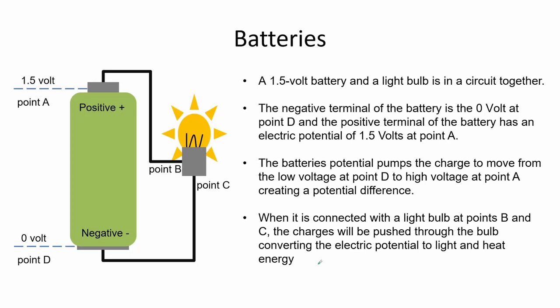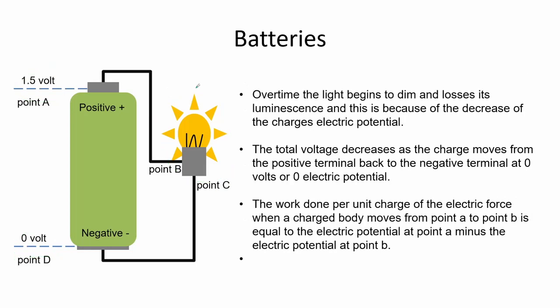Here we have a 1.5-volt battery and a light bulb in a circuit. The negative terminal is at 0 volts at point D and the positive terminal has an electric potential of 1.5 volts at point A. The battery pumps charges from low voltage at D to high voltage at A, creating an electric potential difference. When connected with a light bulb, the charges are pushed through the bulb, converting electric potential to light and heat energy. Over time the light dims because the electric potential decreases. The total voltage decreases as charge moves from the positive terminal back to the negative terminal. The work done per unit charge equals the electric potential at A minus the electric potential at B.